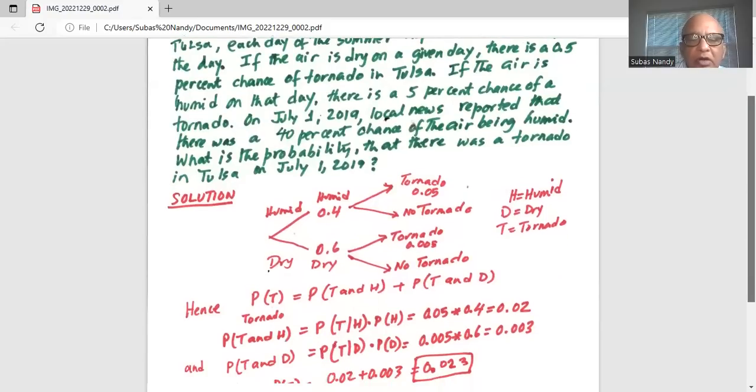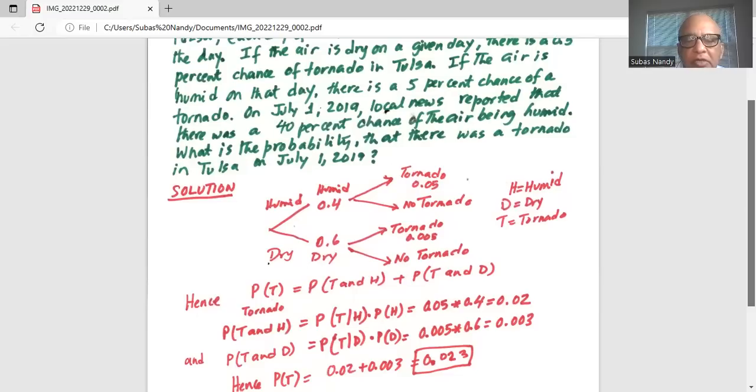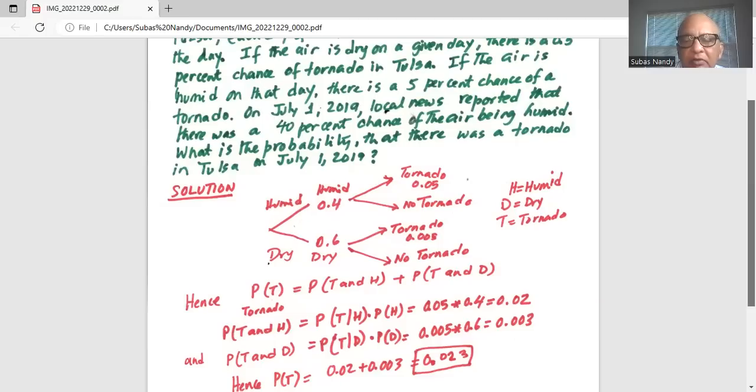Now, probability of tornado and humid is equal to probability of tornado given the day is humid multiplied by probability of humid. Probability of tornado given the day is humid is 0.05 and probability of humid is 0.4. So those two probabilities are multiplied: 0.05 times 0.4 is 0.02.